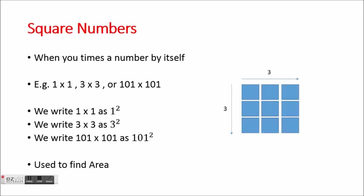The first is square numbers. This is just when you multiply one number by itself, so one times one or three times three, and that works with any single number. All we do is write the number that we're multiplying and put a little two above it — that means squared. So if you see a one with a floating two, like this one here, that means one times one.